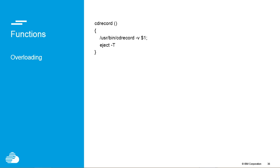You can override things that are already in your path with path functions. So 'usr/bin/cdrecord' is in your path, and you write a function called 'cdrecord', and it'll run this instead of that. That means it can eject, which is what is supposed to happen after you burn a CD.